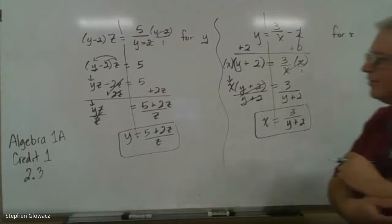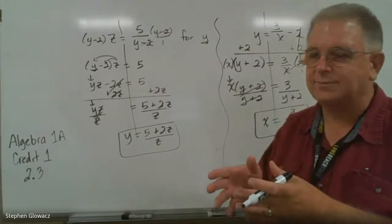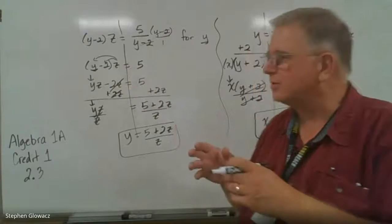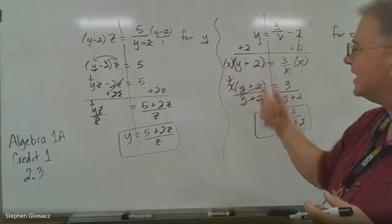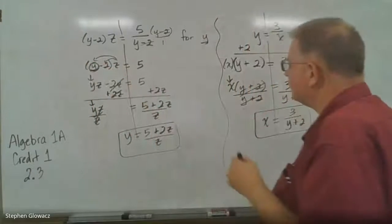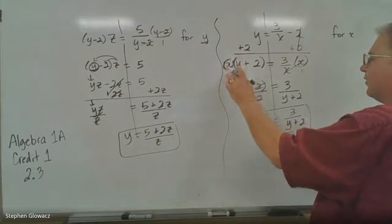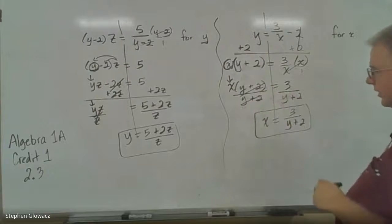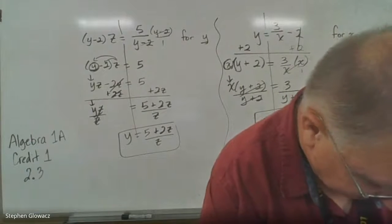The rules all make sense if you watch carefully. On problem 9, we were solving for Y, which was inside the parentheses, so we had to distribute to get Y by itself. But on problem 10, we were solving for X, which was outside the parentheses, so dividing by Y plus 2 was all we needed to do. If it doesn't quite make sense, watch the videos again and it should click.